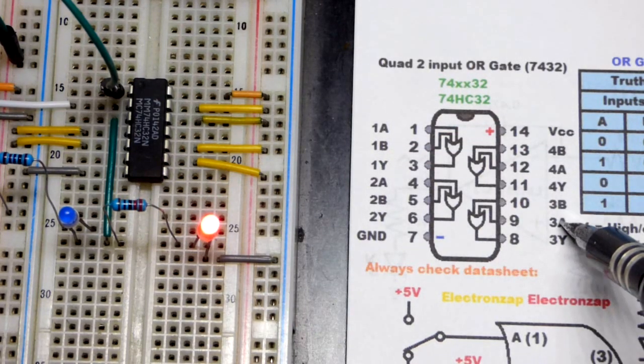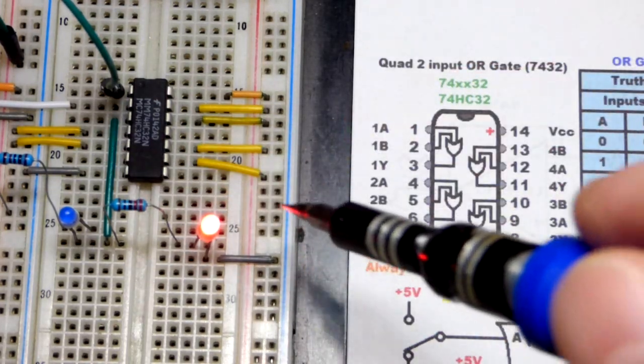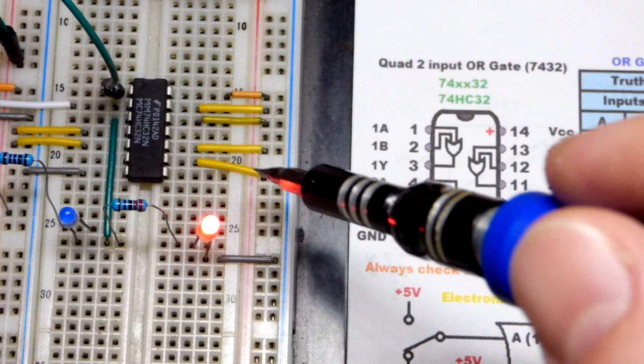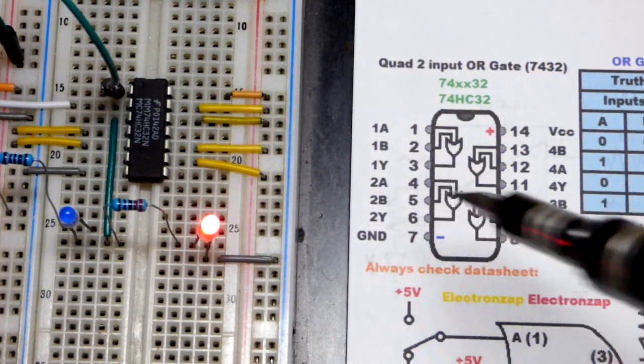We have the inputs for the OR gates we are not using. We tie to one supply voltage or the other. I got a bunch of these yellow jumpers, so I just used yellow for positive for them. We can leave the outputs floating though. That's no problem.